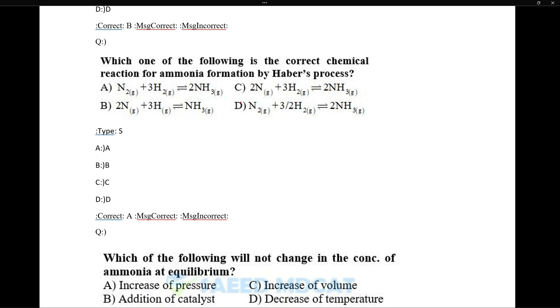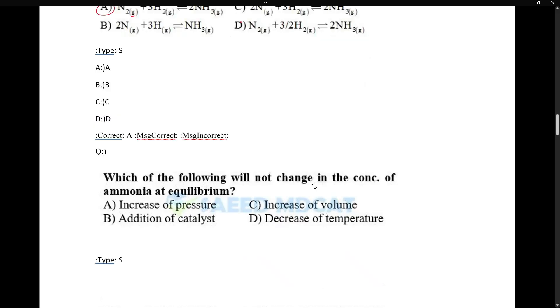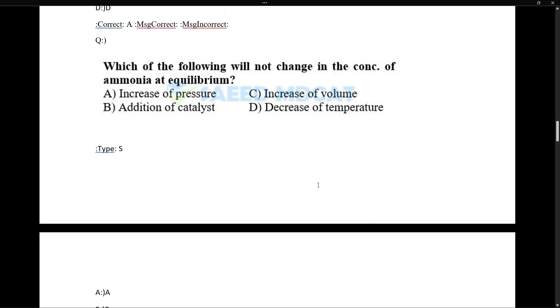Which of the following is correct chemical reaction for ammonia formation or for the Haber process? This one is correct: nitrogen gaseous state plus hydrogen gaseous state gives ammonia gaseous state, reversible reaction, balanced chemical equation. So alpha is the correct answer.